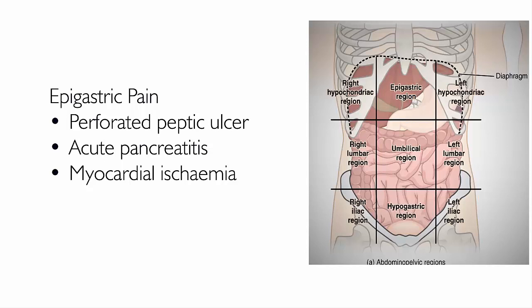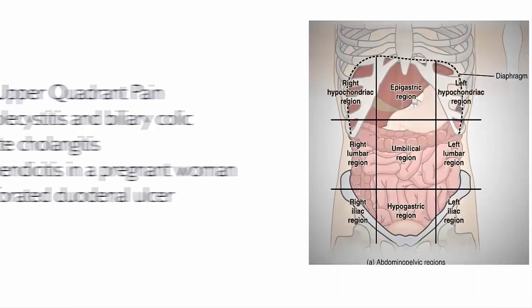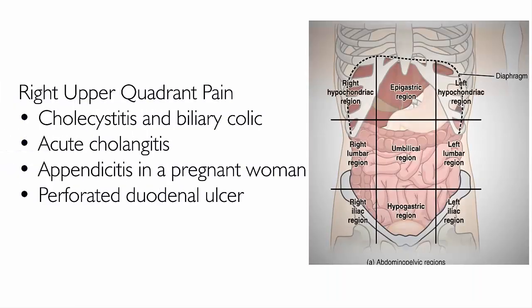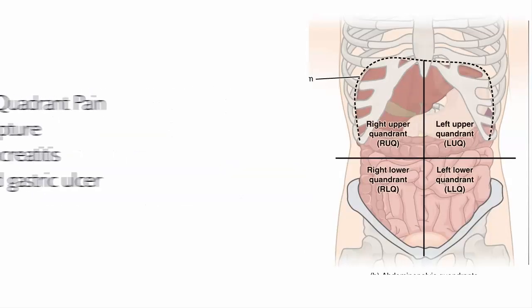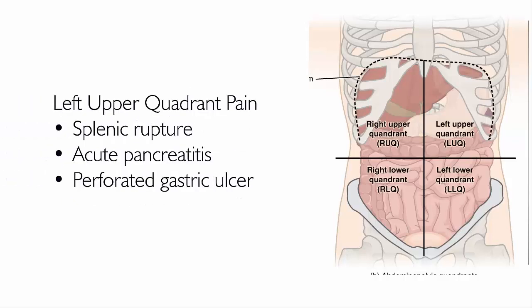Right upper quadrant pain can be caused by cholecystitis and biliary colic, acute cholangitis, appendicitis in a pregnant woman, or perforated duodenal ulcer. Left upper quadrant pain can be caused by splenic rupture, acute pancreatitis, or perforated gastric ulcer.